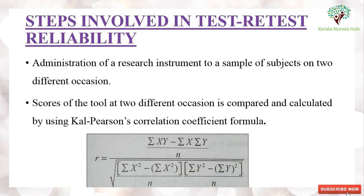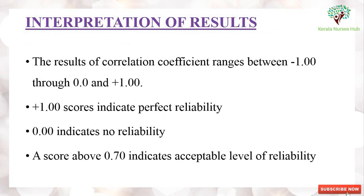The steps involved in test-retest reliability: administer the research instrument to the same subjects on two different occasions. The scores of the tool at the two different occasions are compared and calculated using the Karl Pearson's correlation coefficient formula. The results of the correlation coefficient usually range between minus 1, through 0, and plus 1. A plus 1 score indicates perfect reliability, a zero score indicates no reliability, and a score above 0.70 indicates an acceptable level of reliability.